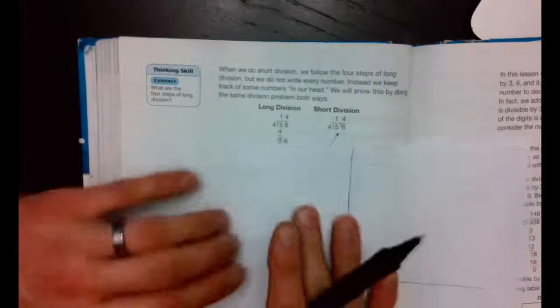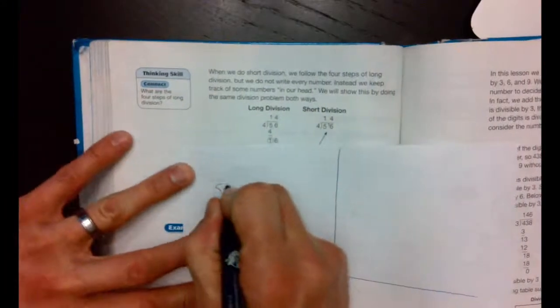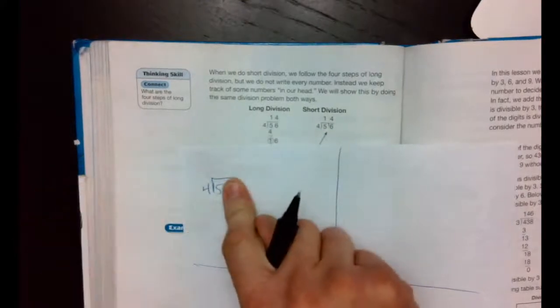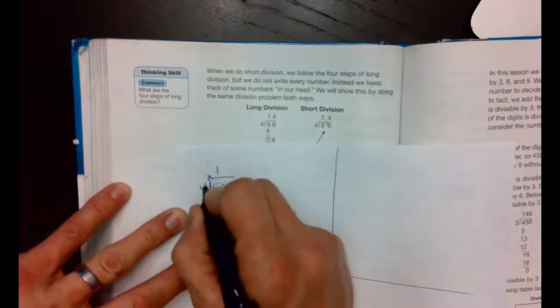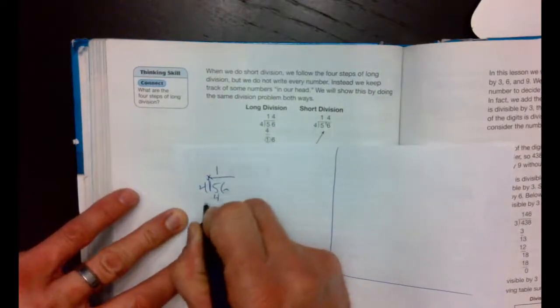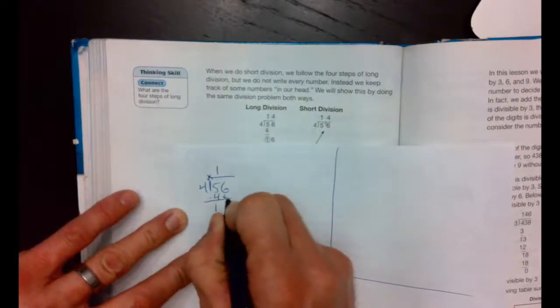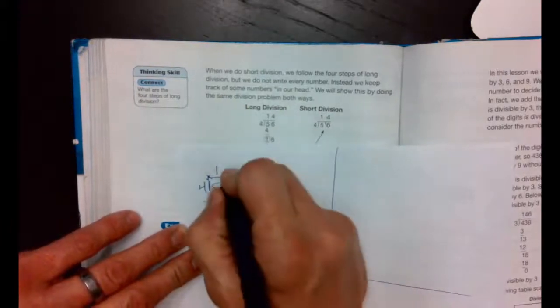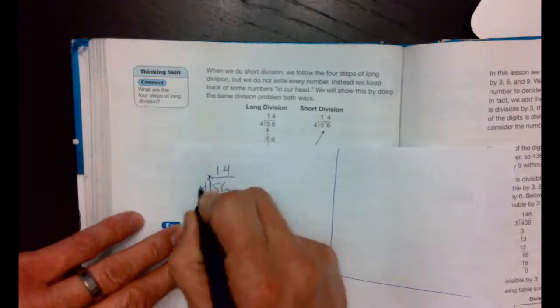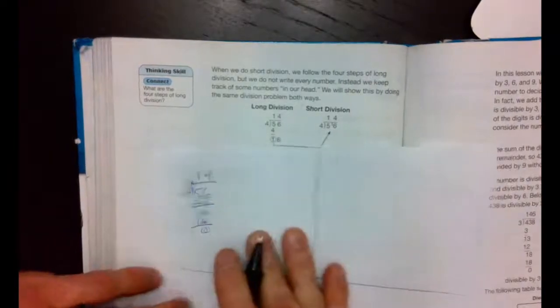Let's go in our first box. We got 56 divided by 4. How many times is 4 going to 5? 1 time. Second step, multiply. 1 times 4 is 4. Subtract, you get 1. Bring down the 6. 16. How many times 4 going to 16? 4 times. Multiply 4 times 4 is 16. Subtract, get 0. You're done.